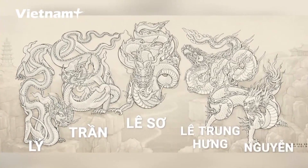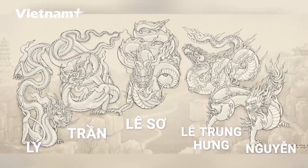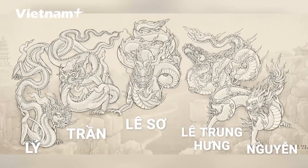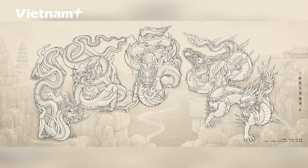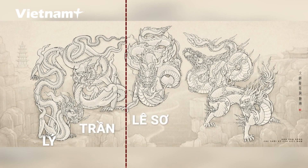The Li, Tran, Le, Le Trung Hung, and Nguyen dynasties are notable in Vietnamese history for their distinct artistic styles. They can be differentiated into two types — the Li-Tran Dragon and the Nguyen Dragon — with the main distinction lying in the shape of the nose and head.